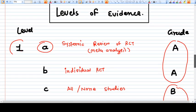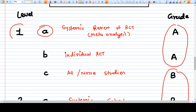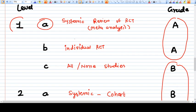So what includes in grade 1a? Systematic review of RCT randomized control trials including meta-analysis. This is the highest level of evidence, 1a and grade A evidence. Grade 1b is an individual RCT, individual well-maintained and well-performed randomized control trial. And level 1c is all or none studies.